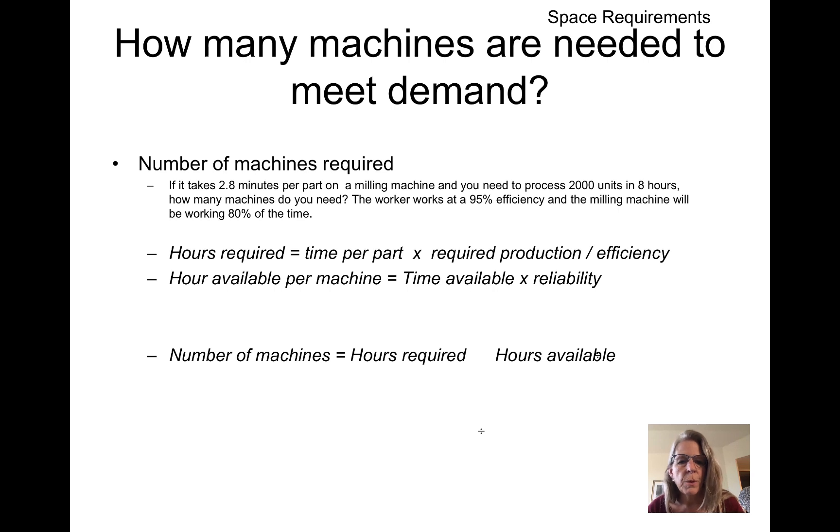We want to look at the hours required and divide it by the hours available. The hours required are the time per part times the production required divided by the efficiency. The hours available are the time available times the reliability. We take the hours required and divide it by the hours available in order to get the number of machines.